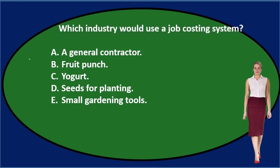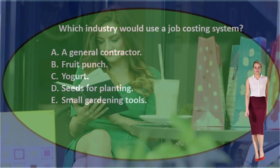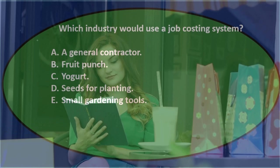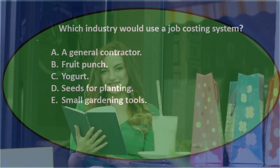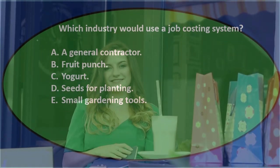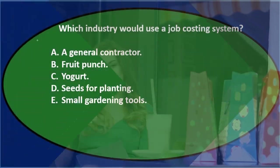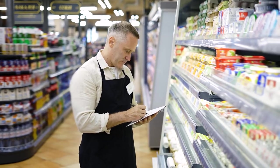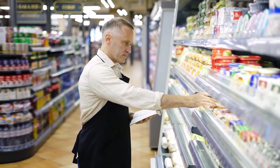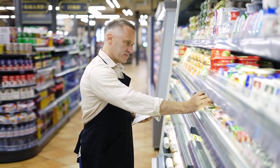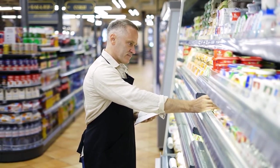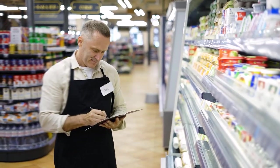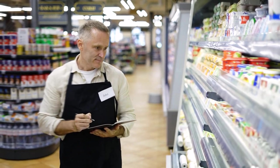When we think about this, we always consider the alternative costing system — process costing. The major differentiation between the two is that a job cost system involves differentiation in inventory, whereas a process cost system involves inventory that is all the same. Therefore, in job costing we track costs by job, and in process costing we track costs by process.